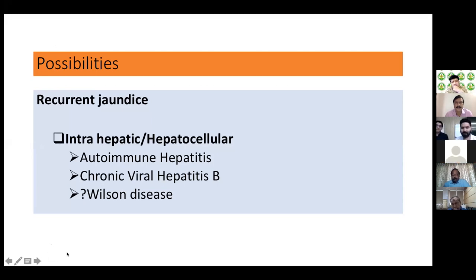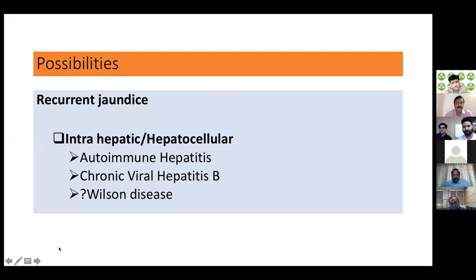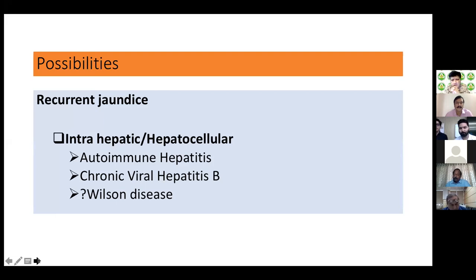Based on history, Akash concluded this is hepatocellular origin, predominantly non-cholestatic. His first possibility is autoimmune hepatitis: points in favor — young age, female gender, multiple non-cholestatic episodes without prodromal symptoms. Points against — spontaneous resolution without treatment and recurrent annual episodes, which would be a soft pointer against AIH.